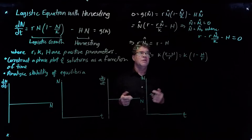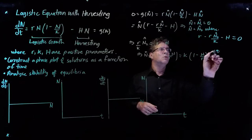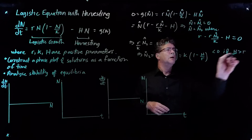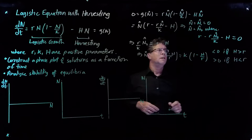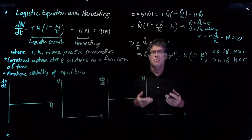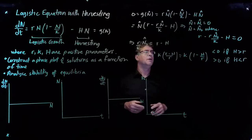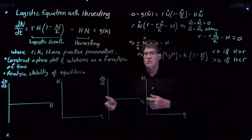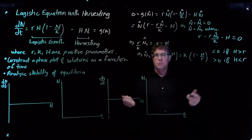What's really interesting is that this equilibrium could be positive or negative. It's less than zero if h is greater than r, and greater than zero if h is less than r. If h is bigger than r, the harvesting rate exceeds the intrinsic growth rate and we lose this equilibrium. If h is less than r, we have a positive equilibrium.